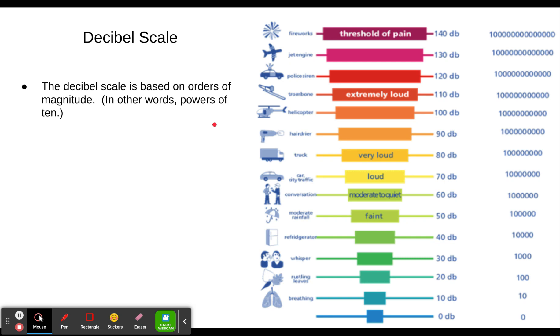So first of all, the decibel scale works on orders of magnitude, in other words, powers of 10. You'll notice here that as these get 10 to the first power, 10 to the second power, 10 to the third power, 10 to the fourth power, and so forth, that these are just changing by 10. So 10 to the seventh power is 70, 10 to the 11th power is 110. You can see the 11 there.